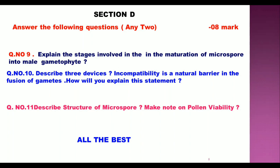Explain the concepts of incompatibility and natural barriers in the fusion of gametes, and how they prevent self-pollination. Describe the structure of a microspore. Also explain and describe the diagram and make a note on pollen viability, covering the two types of pollen viability.